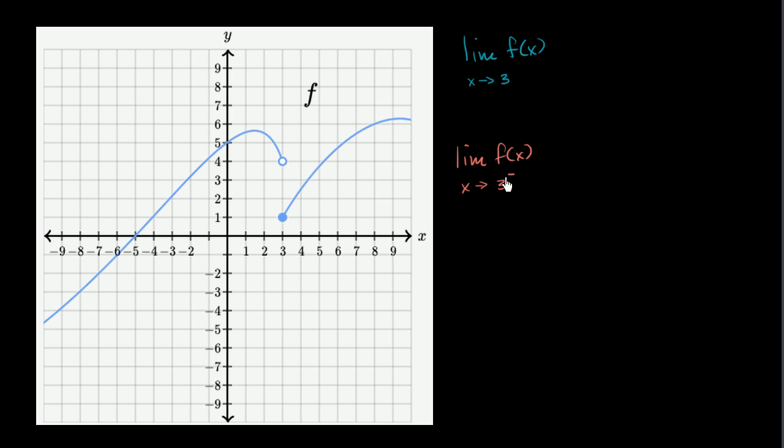So this little negative superscript says we're going to approach 3 from below 3, from 1, 2, 2.5, 2.99, 2.999. So if we approach, so this is 3 right over here, and we're going to take the left-handed or the left-sided limit. We're going to approach 3 from this direction.